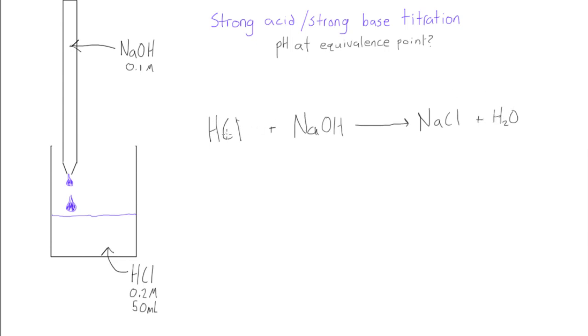This is a one-to-one ratio and we know from the previous videos, we can just do it again. We had 0.2 molar times 0.05 liters and that was giving us 0.01 moles of HCl.